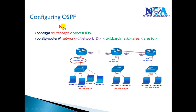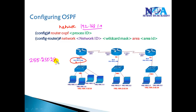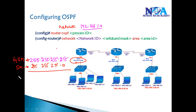To advertise a network such as 192.168.1.0 inside OSPF, we write 'network 192.168.1.0' followed by a wildcard mask. To calculate the wildcard mask, we subtract the subnet mask from the global subnet mask of all 255s. For example, for a slash-24 subnet mask, 255.255.255.255 minus 255.255.255.0 gives a wildcard mask of 0.0.0.255.